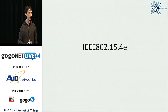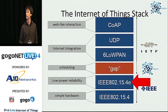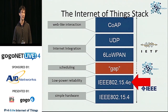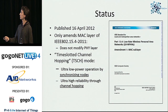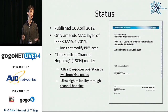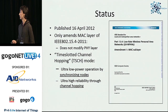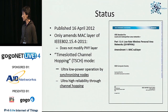Now let's talk about 15.4E. It is a MAC layer — an amendment of the 15.4 standard that proposes new MAC modes. We will especially discuss the mode called Time Slotted Channel Hopping, or TSCH. This was published on April 16th, 2012, so it's a fairly new standard — technically an amendment to the MAC layer defined by 15.4, not a new standard itself.